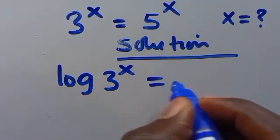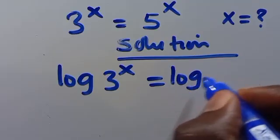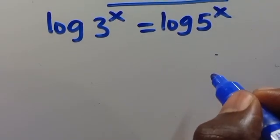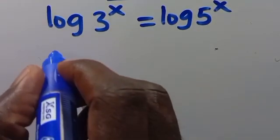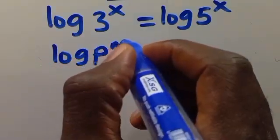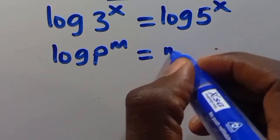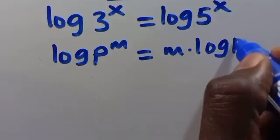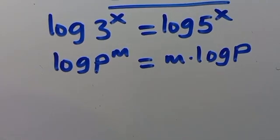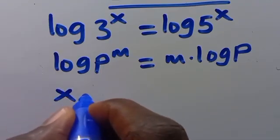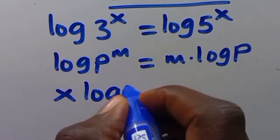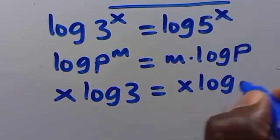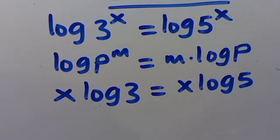Log 2 to the power of x equals log 5 to the power of x. Then let us recall that when we have log p to the power of m, it equals m multiplied by log p. So from here we have x times log 2 equals x times log 5.